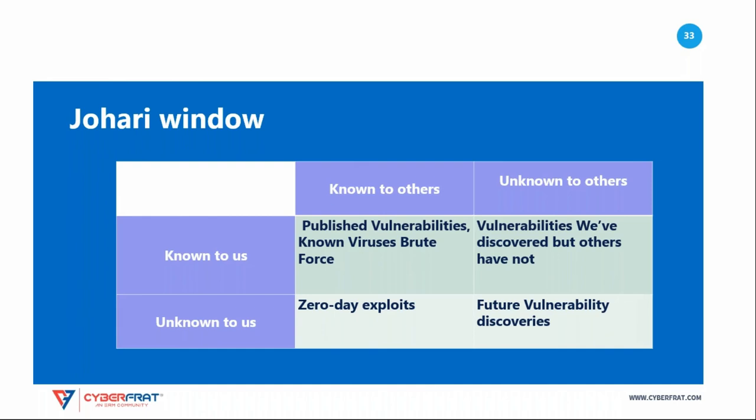The category of unknown knowns contains threats that are known to others but not to us. For example, if an attacker discovers a new zero-day security exploit but has not yet used it, they know of a security threat, but we have no way of knowing about the threat until the exploit is actually used or it is discovered independently by a third party.